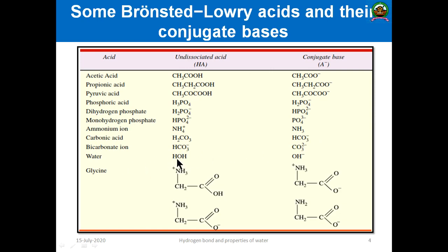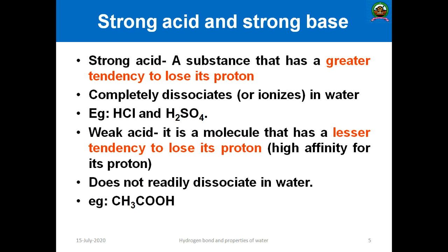Water can act as both an acid and a base. Similarly, amino acids such as glycine — which are alpha-amino substituted carboxylic acids — have an amino group and a carboxylic acid group. The carboxylic acid group can donate an H plus to form an ion. These are examples of Bronsted-Lowry acids and their conjugate bases.